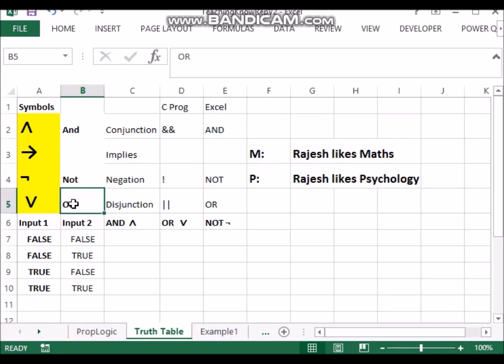Now I can apply these operations on this. I could say not in front of the statement Rajesh likes maths and it will become Rajesh does not like maths.